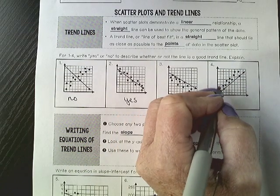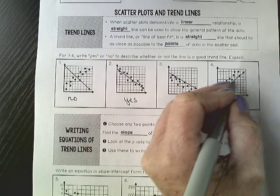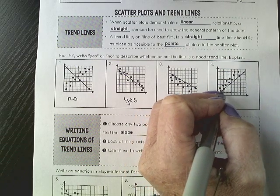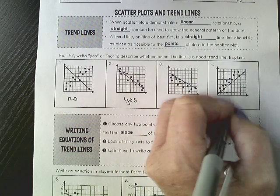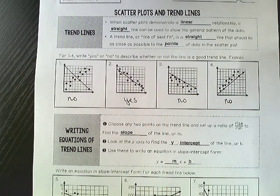And then number four, the line is below all of our data points. That line should have been up a little bit more and drawn through. So this also would be a no.